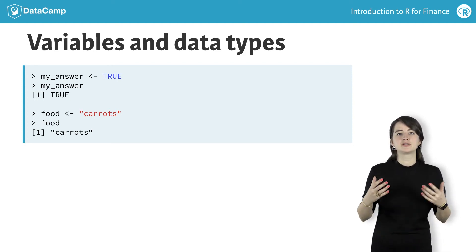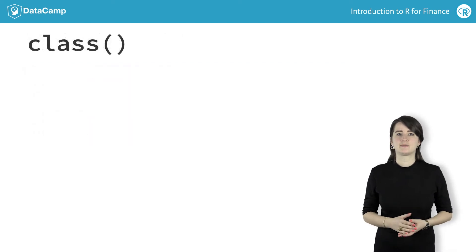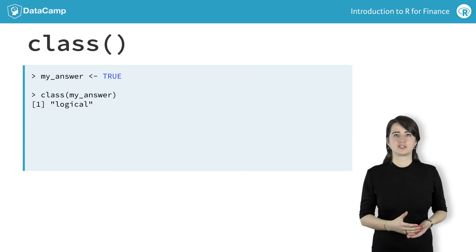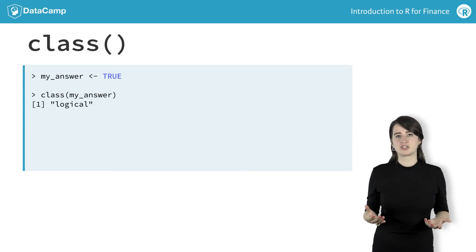Given a variable, you can use R to determine what data type it is using class(). Using class() on my_answer returns logical, telling you that the my_answer variable contains a logical data type.